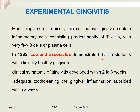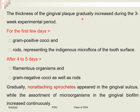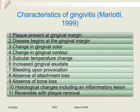The classic study by Loe demonstrated that in students with clinically healthy gingiva, clinical symptoms of gingivitis developed within two to three weeks without tooth brushing, but with adequate tooth cleaning gingival inflammation subsided within a week. During the first few days, gram-positive cocci and rods representing indigenous microflora were found. After four to five days without plaque control, organisms changed to filamentous organisms, gram-negative cocci, rods, and non-attaching spirochetes appearing in the gingival sulcus.